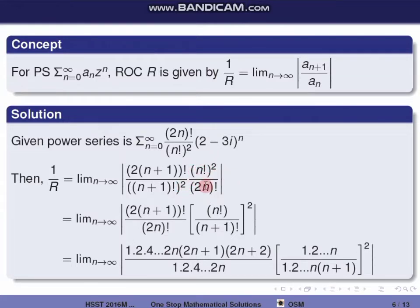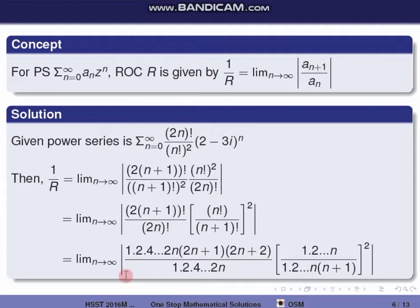Substituting: 1 by r equals limit n tends to infinity of (2(n+1)) factorial divided by ((n+1) factorial) squared, divided by (2n) factorial divided by (n factorial) squared. This simplifies to (n factorial) squared times (2n+2) factorial divided by ((n+1) factorial) squared times (2n) factorial. Expanding the factorials and cancelling similar terms, we get 2n+1 times 2n+2 in the numerator and (n+1) squared in the denominator.